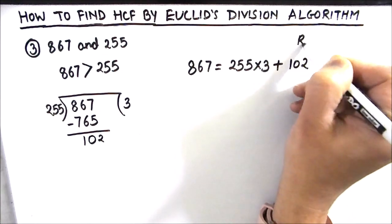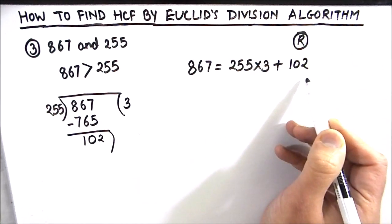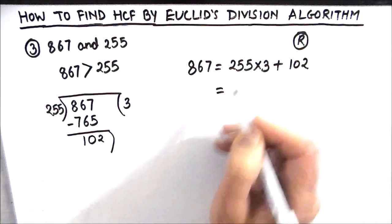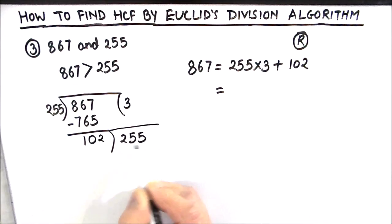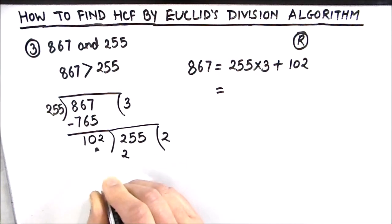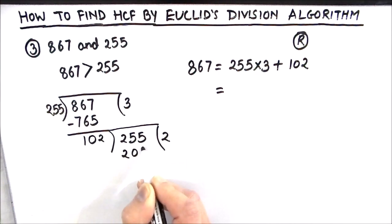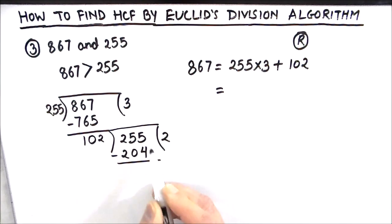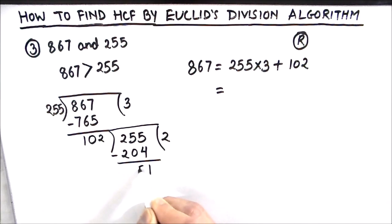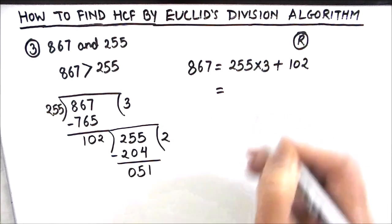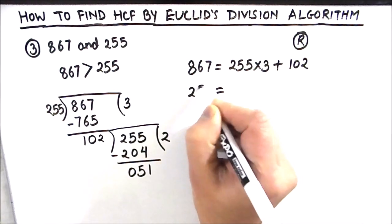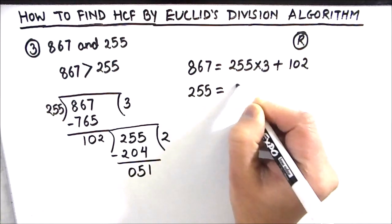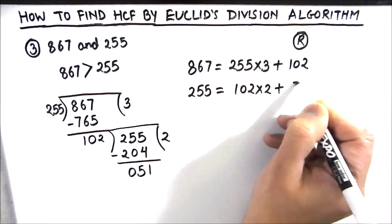Since the remainder is not 0, we continue. We divide 255 by 102. 102 times 2 is 204. Subtracting: 5 minus 4 is 1; 5 minus 0 is 5; 2 minus 2 is 0. Our new remainder is 51. So we write 255 = 102 × 2 + 51.